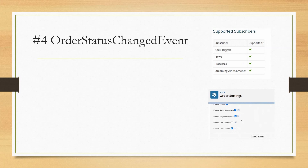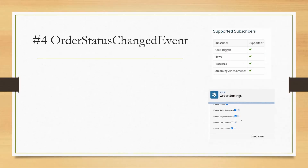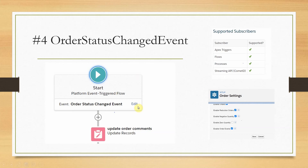To get notifications on order status updates, under Setup, inside Order Settings, you need to enable the feature called 'Enable Order Events'. Once enabled, automatically on each order status update a platform event will be fired. You can see a screenshot of a sample flow I used to consume the standard Order Status Change Event. I consumed the Order Status Change Event and, based on the status value, I update comments on the order object to capture details like who updated it and what the change state is.